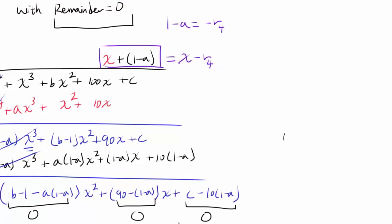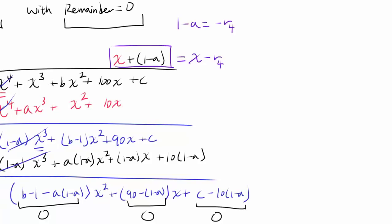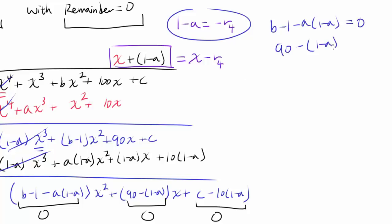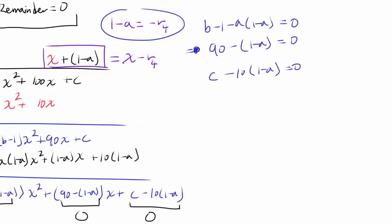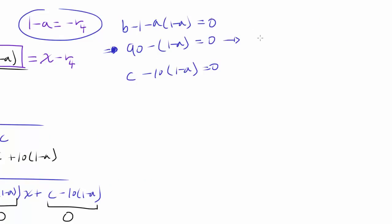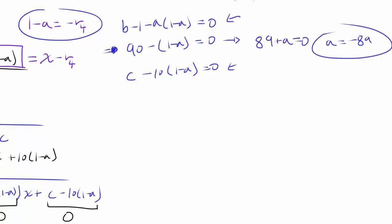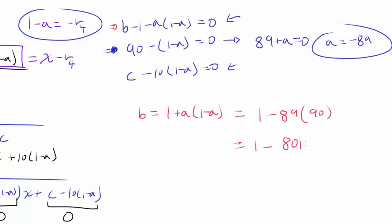Now let's connect all of these together. From the equation 90 − (1 − A) = 0, we get 89 + A = 0, so A = −89. Now we can use this to find B. From B − 1 − A(1 − A) = 0, we get B = 1 + A(1 − A) = 1 + (−89)(90) = 1 − 8010 = −8009.